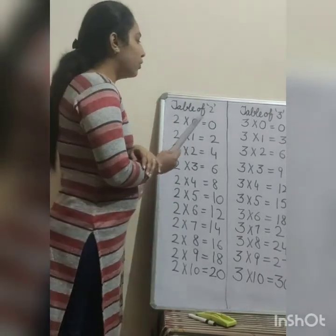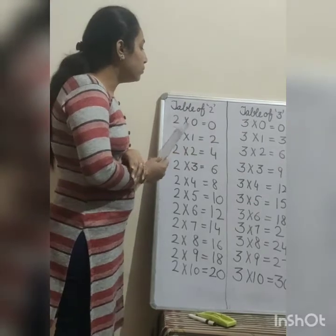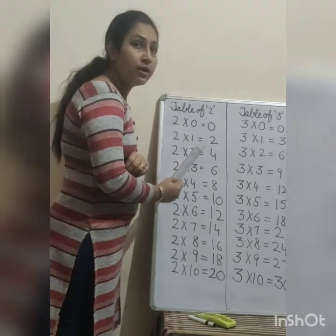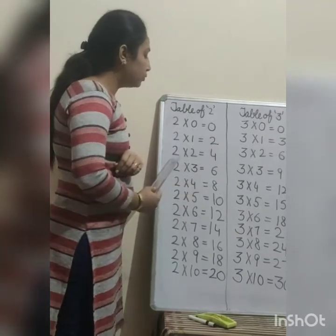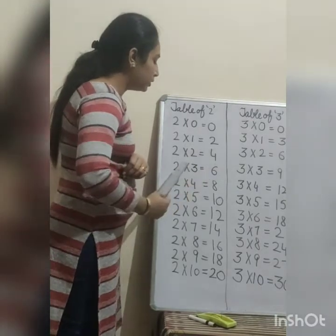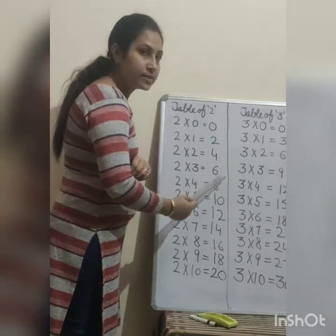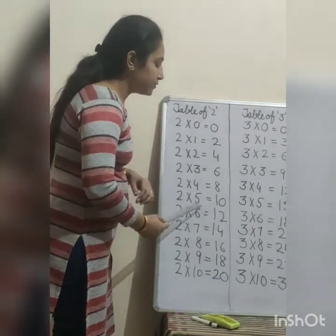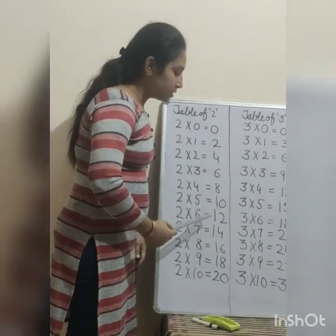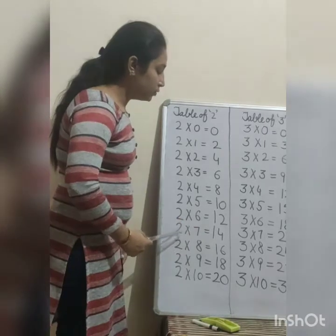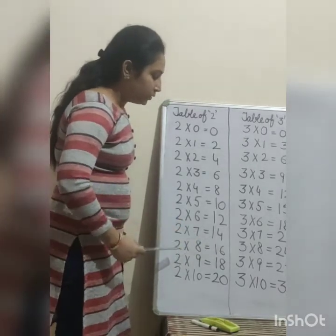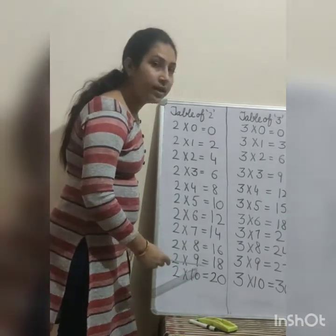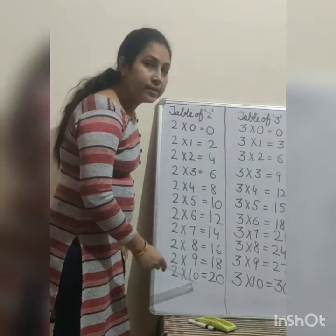Let's start. Table of 2. 2 ones are 2, 2 twos are 4, 2 threes are 6, 2 fours are 8, 2 fives are 10, 2 sixes are 12, 2 sevens are 14, 2 eights are 16, 2 nines are 18, 2 tens are 20.